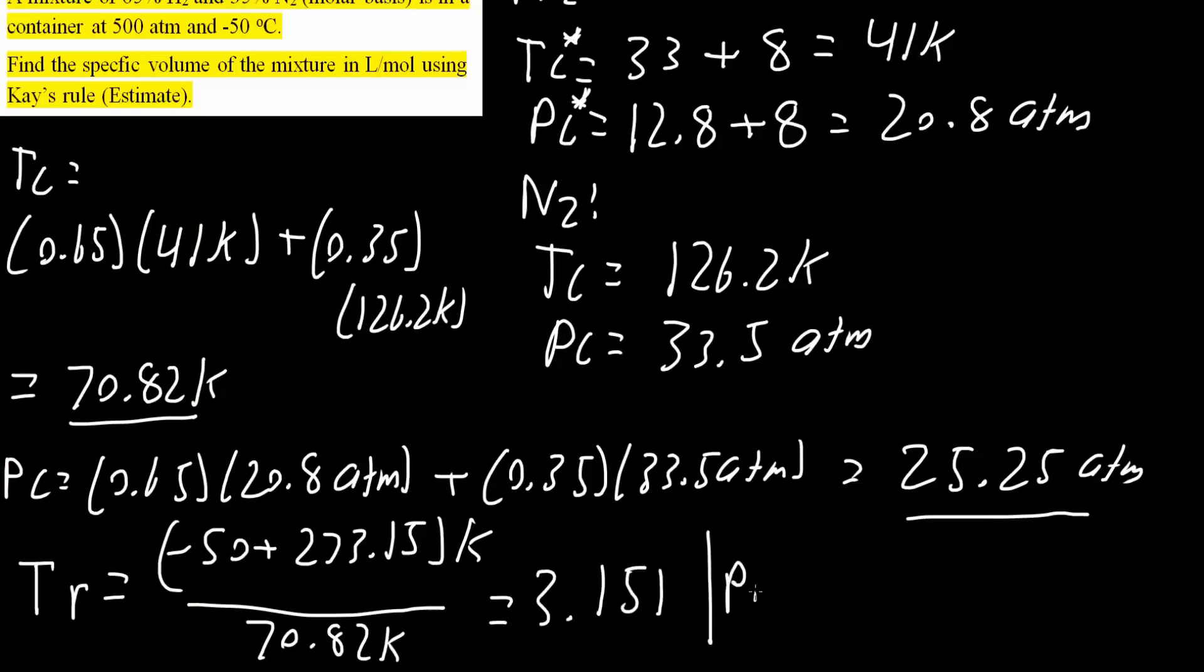Next, we get PR. Similar idea. We get the pressure in the container, which is 500 atmospheres, divided by PC. PC was 25.25 atm, and we would get 19.8.